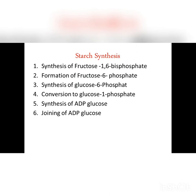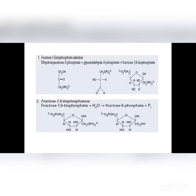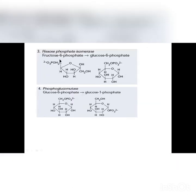The third step is synthesis of glucose 6-phosphate. Fructose 6-phosphate is converted into its isomer glucose 6-phosphate with the help of enzyme hexose phosphate isomerase. In the fourth step, this glucose 6-phosphate is converted into glucose 1-phosphate. The position of the phosphate group is changed with the help of enzyme phosphoglucomutase.